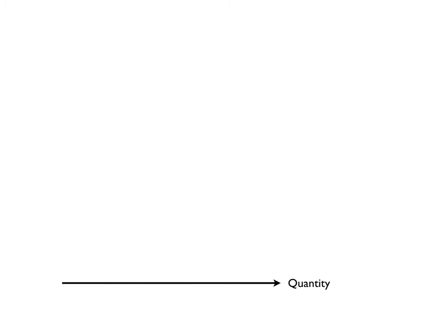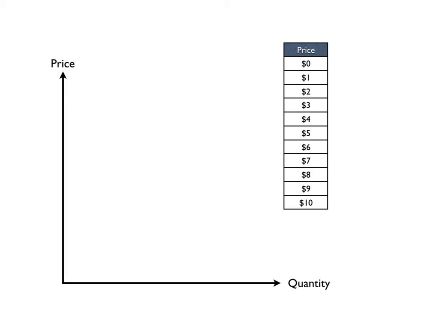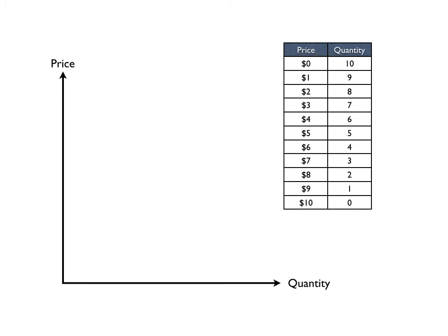We do the same thing with the demand curve. So we'll start off with again our price and quantity, and we have our schedule here, and we have our demand curve equation, which is quantity demanded equals 10 minus P. And now we have the same variables we had before, and we have our demand curve.